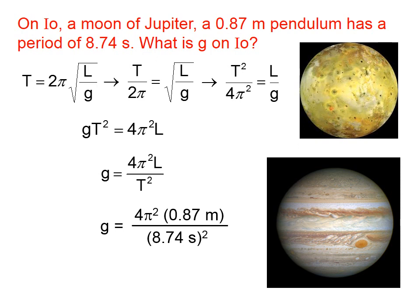Then we simply put in the numbers we have. The length of the pendulum is 0.87. The time, that is the period of the pendulum, is 8.74. Remember to square that. And the acceleration due to gravity on Io is quite a bit smaller than on the Earth. On the Earth, g is about 9.8, and on Io, it's only 0.45 meters per second squared.